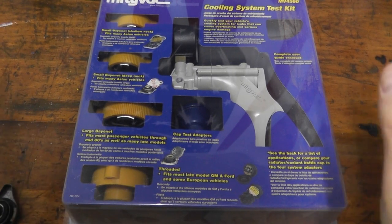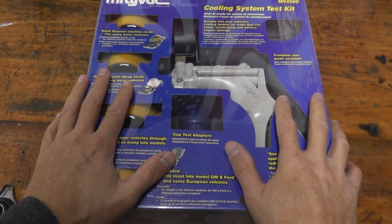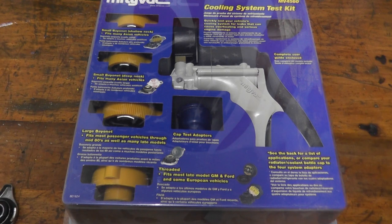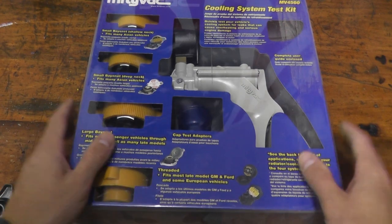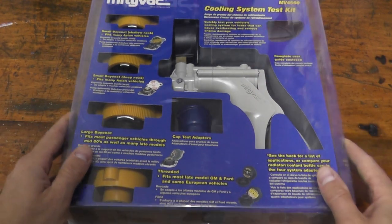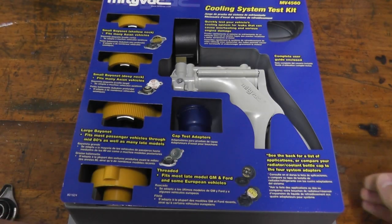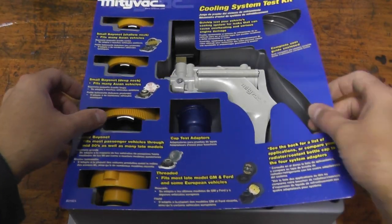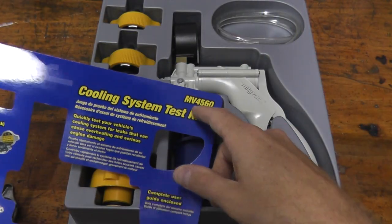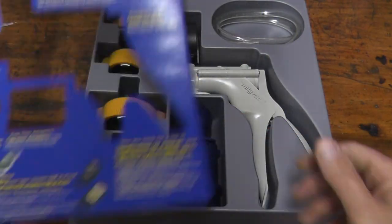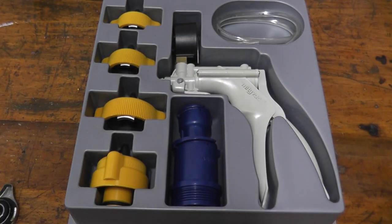Now testing the cooling system is very easy especially with a kit like this. This runs for a little under $40, I'll include a link to Amazon if you're curious or you're looking to purchase one for your own vehicle. You can also rent these for free typically at your local auto parts store. This one specifically is the MightyVac MV4560.